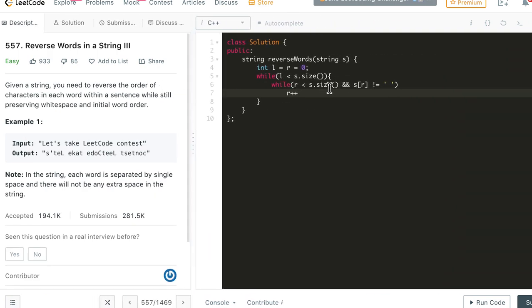So till we encounter the end of the string or a space character, we keep incrementing this right index. Once this loop exits, we have found l and r are pointing to the beginning and one character beyond the word, so we will reverse them. Finally we will return this reversed wordwise reversed string.